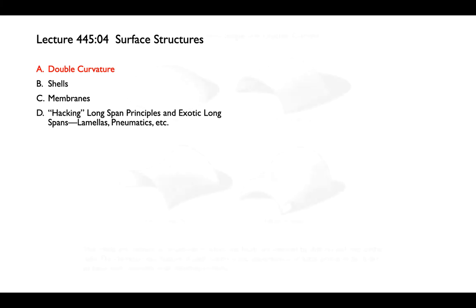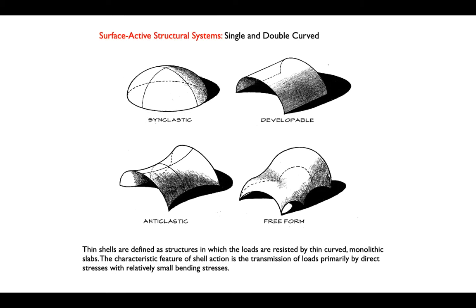What do we mean by double curvature? This is really the fundamental principle behind shell design. When we create a surface that is what we call undevelopable — that basically can't be unfolded easily — we get a phenomenal amount of strength from a very small amount of material. The difference between a structure that works as a surface active shell and one that does not is that it is synclastic. You can trace two different curves on its surface. This is different from a developable surface, where there is just one curve, usually an extruded curve.